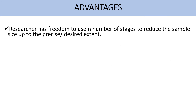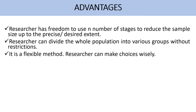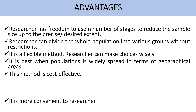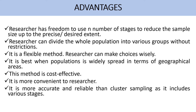What are the advantages of multi-stage sampling? The researcher has the freedom to use any number of stages to reduce sample size up to the precise or desired extent — it is purely the researcher's choice where to stop. The researcher can divide the whole population into various groups without any restrictions. It is a flexible method. It is best when the population is widely spread in terms of geographical areas. This method is cost-effective instead of using simple random sampling, and it is more convenient to the researcher. It is more accurate and reliable than cluster sampling as it includes various stages.